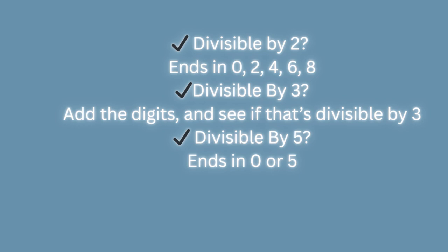Let's move to our last trick of this video: How to know if a number is divisible in seconds. If a number is divisible by 2, it ends in 0, 2, 4, 6, or 8. If a number is divisible by 3, add the digits and see if that's divisible by 3. Now let's check divisibility by 5. If the number ends in 0 or 5, it is divisible by 5.